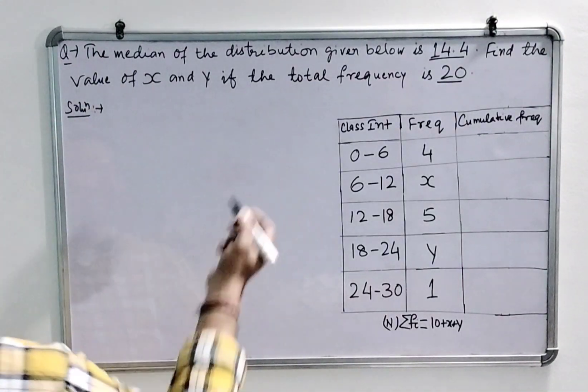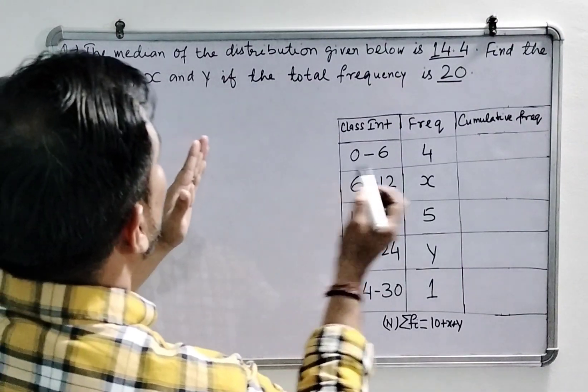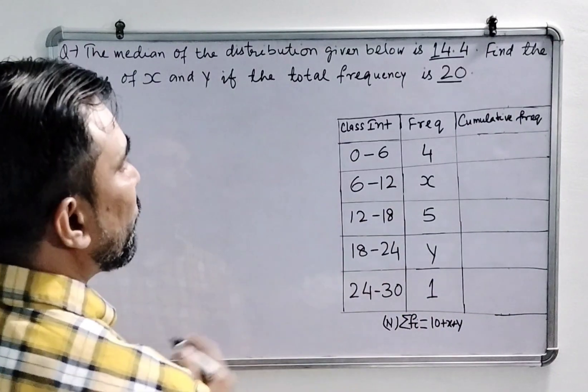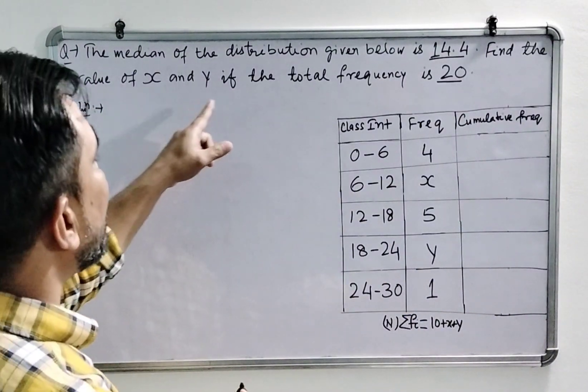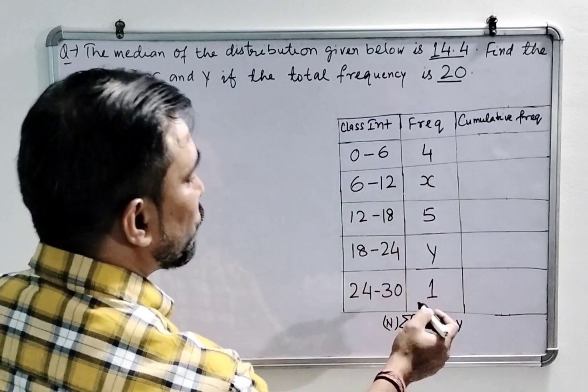Welcome students. Here is a question in which the median of this distribution is given as 14.4, and we have to find x and y if the total frequency is 20.